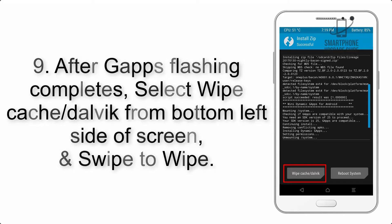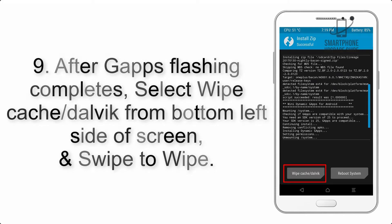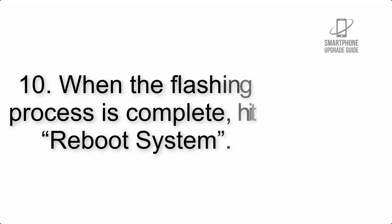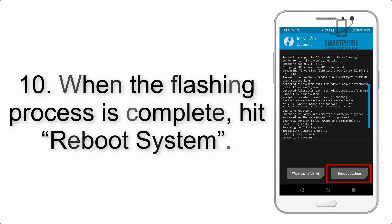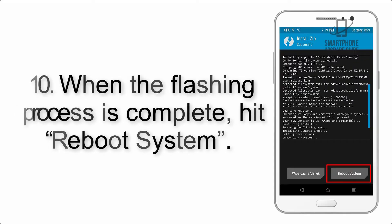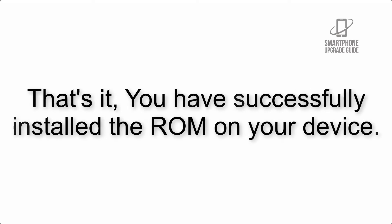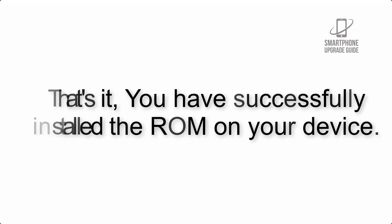Step 8: Flash the GApps zip package in the same manner. Step 9: After GApps flashing completes, select Wipe Cache and Dalvik from the bottom left side of the screen and swipe to wipe. Step 10: When the flashing process is complete, hit Reboot System. That's it — you have successfully installed the ROM on your device.